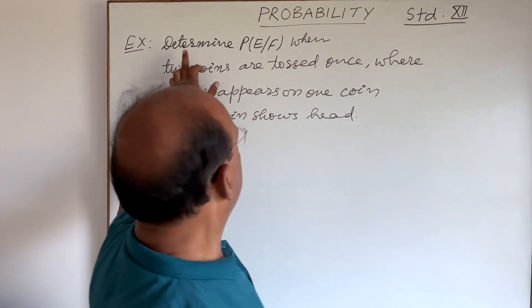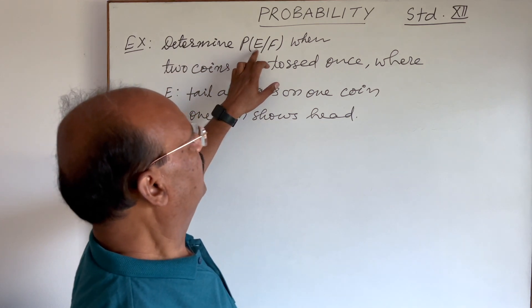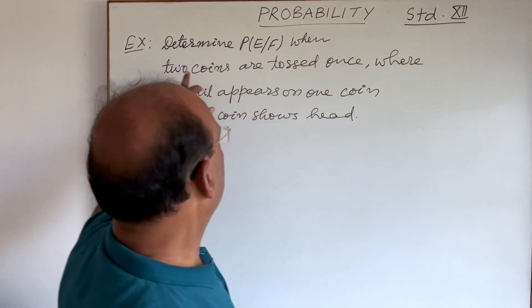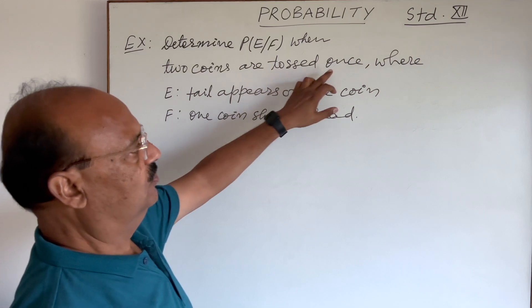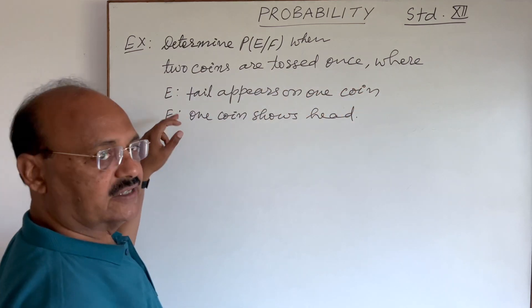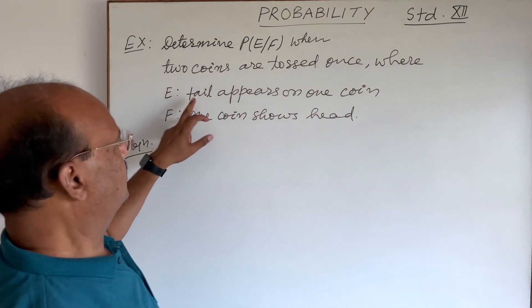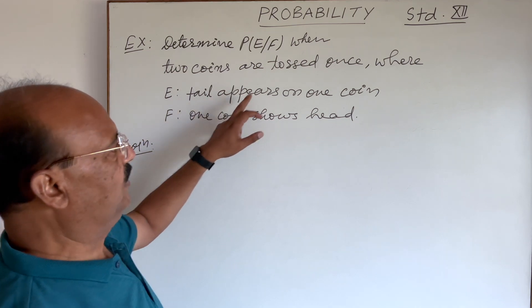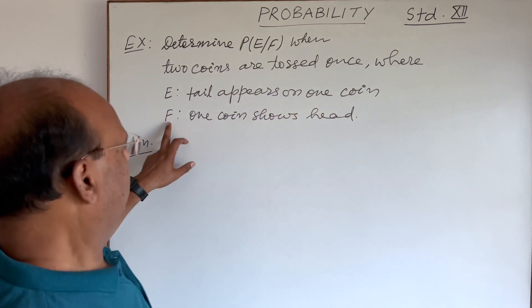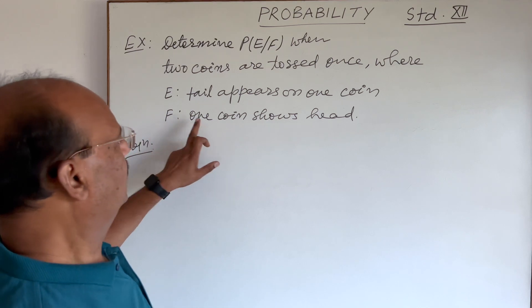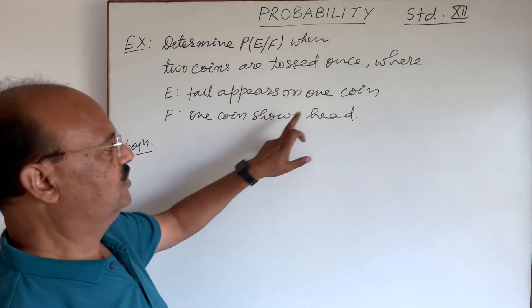Here question is, determine probability of E conditioned to F when two coins are tossed once, where two events are here. Event E contains the elements having tail appears on one coin and event F is having one coin shows head.